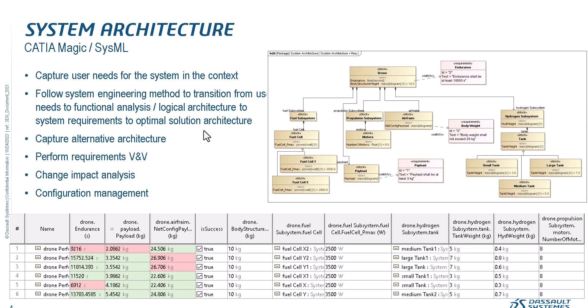From the system architecture side, we capture user needs to understand what is actually needed, so we can validate later whether it is the right system. We follow a system engineering method transitioning from user needs to functional analysis, logical architecture, system requirements, and optimal solution architecture — capturing alternative architectures in SysML and picking the best one based on criteria from user needs.